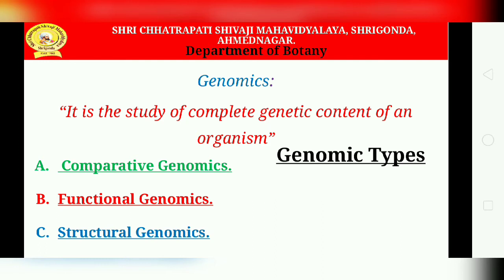The ambitious goal of functional genomics is to determine the functions of all genes and gene products expressed in various cells and tissues of an organism under all sets of conditions that may apply. Structural genomics uses techniques such as X-ray crystallography and NMR spectrometry with the aim of producing a complete structural description of all proteins and macromolecular complexes within the cell.